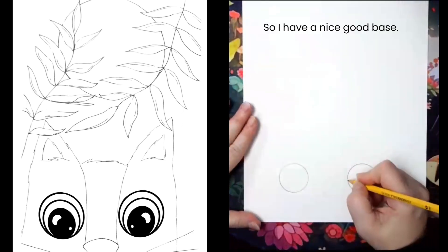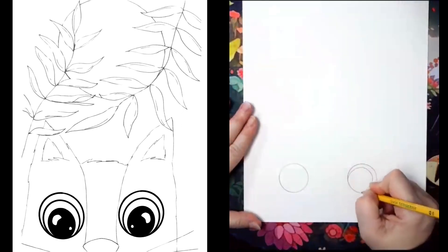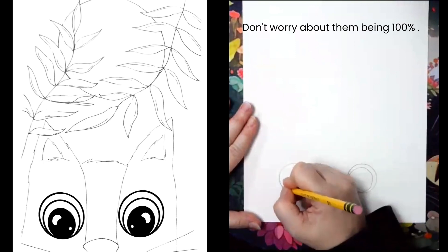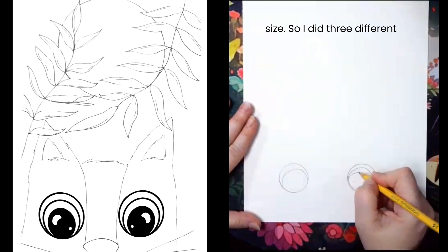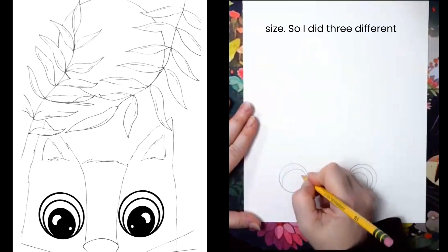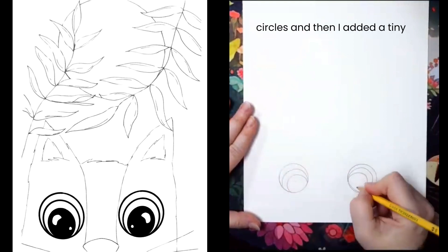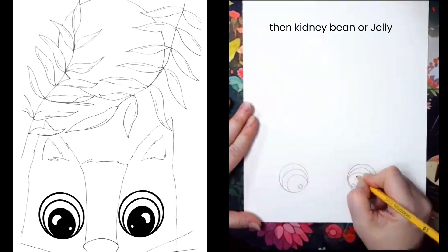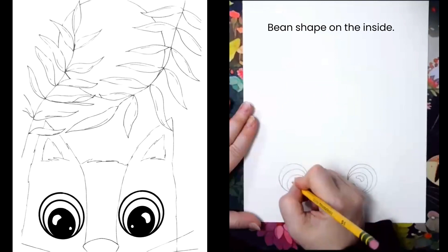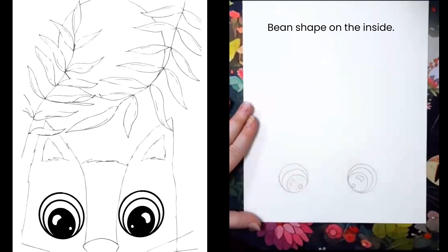So I have a nice good base. Don't worry about them being perfect. I just wanted them to be the same size. So I did three different circles and then I added a tiny little highlight and then a kidney bean or jelly bean shape on the inside.